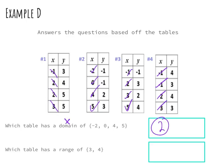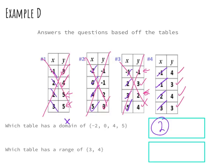Now let's find which table has a range of {3, 4}. Table 1 has 3 and 4, but also has 5 — so it has extra values and is incorrect. Table 2 has 3 but not 4 — incorrect. Table 3 has 3 and 4 but also two extra points — incorrect. Table 4 has 3, 3, 4, 4 — only the values 3 and 4 — so table 4 is the correct answer.